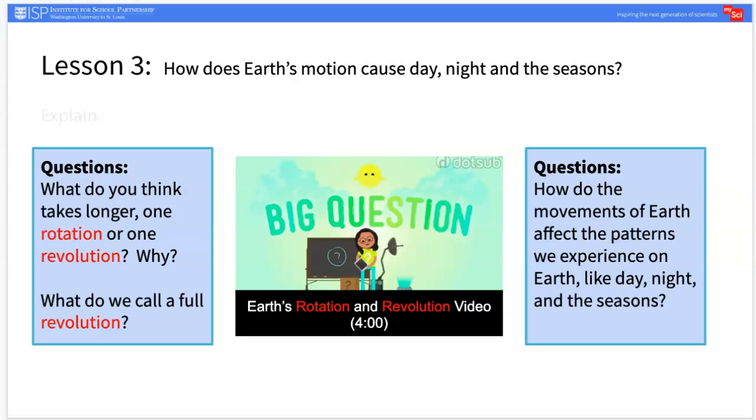In the Explained portion of this lesson, students will be introduced to a second vocabulary term: revolution. Revolution is the orbiting of a celestial object completely around another object. For example, the Earth revolves around the Sun.